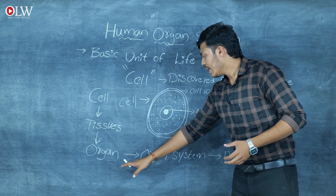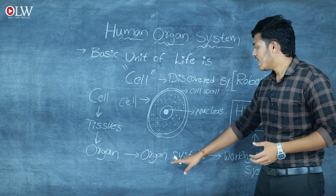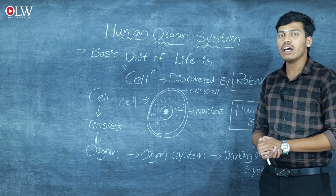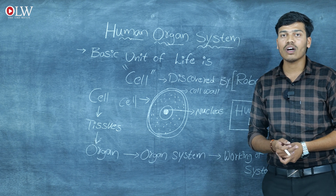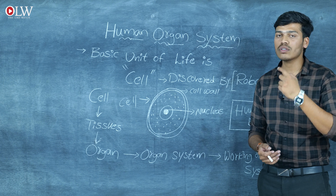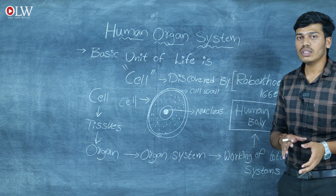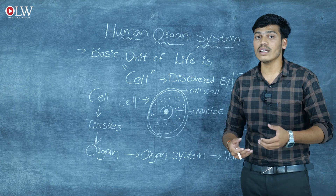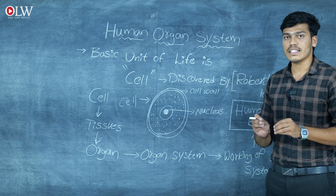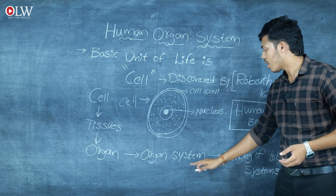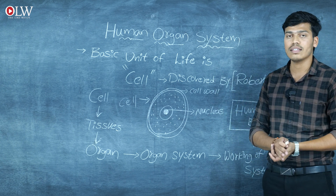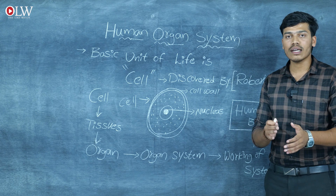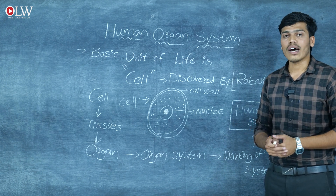The organs are combined together to form an organ system. For example, in human respiration, the respiratory system involves organs such as the nose, trachea, windpipe, and lungs. These are the main parts involved in the respiratory system. The respiratory system is one type of organ system, where two or three organs work together to give one organ system.